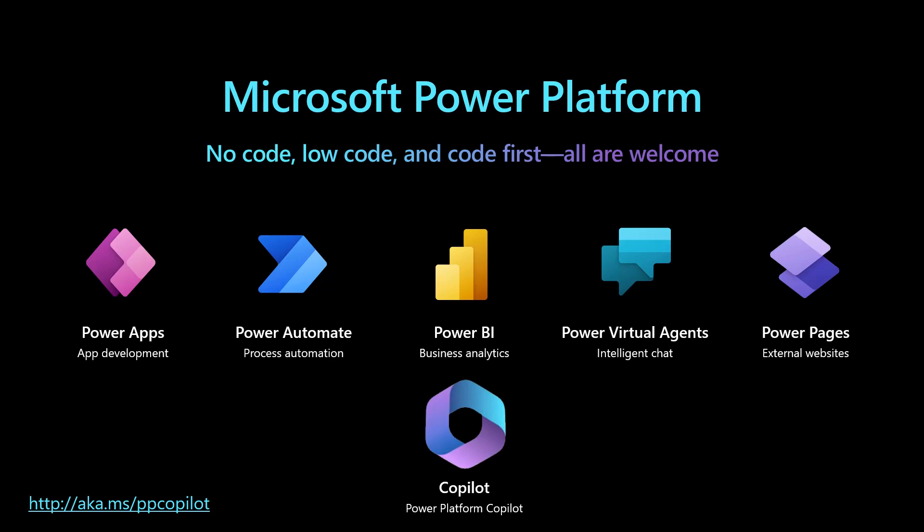The Power Platform consists of five key products: Power Apps for app development, Power Automate for automation processes, Power BI for business intelligence and business analytics, Power Pages for website development, and Power Virtual Agents for that chatbot experience in your solutions.